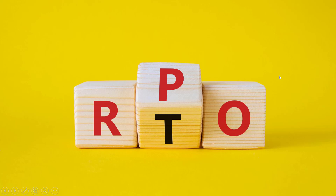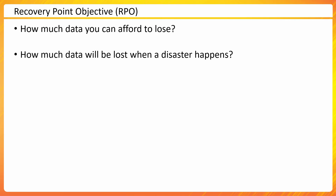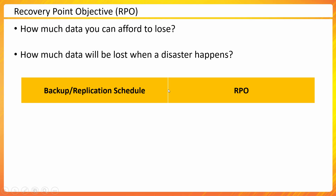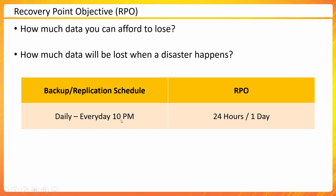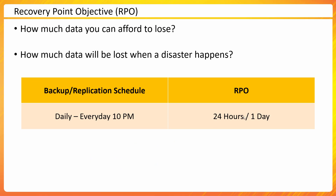Our focus will be on RTO and RPO. RPO stands for Recovery Point Objective. In plain English, it means how much data you can afford to lose, or how much data will be lost when a disaster actually happens. This is directly related to your backup or replication schedule. If you have configured a backup to happen daily at 10 PM, and a disaster occurs on Wednesday at 9:59 PM, you may have lost 24 hours worth of data because your last restore point was Tuesday at 10 PM. So with a daily backup schedule, your RPO is 24 hours.